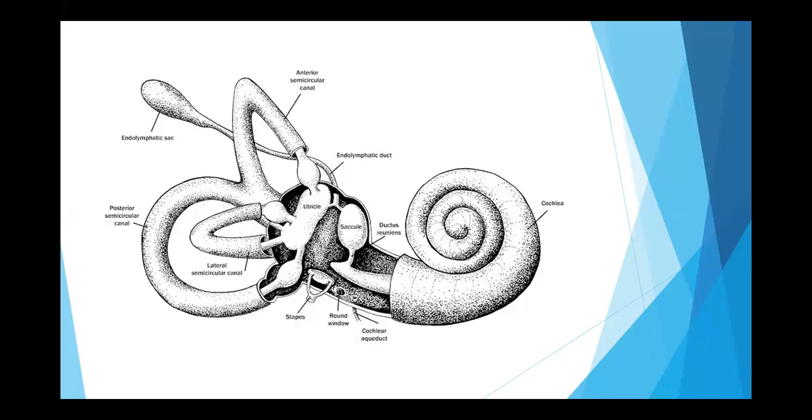So anything that utricle sends, it can easily go into the semicircular canals. And we will look at the anatomy of the utricle. And this is important because there is a disorder named BPPV, Benign Paroxysmal Positional Vertigo, where this anatomy is very important.